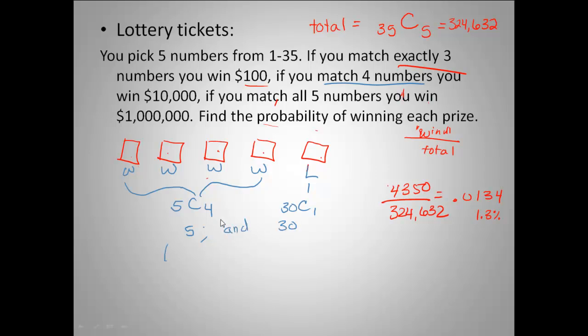And again, it's an 'and'. I need to have four winners and one loser. So I take five times 30 and I get 150. So to match exactly four, I have 150 ways to do it out of 324,632. Divide that out and I get 0.00046, so I have a 0.046% chance of matching all four numbers.